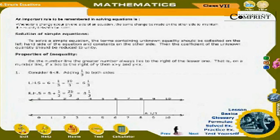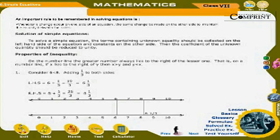An important rule to remember in solving equations: whenever a change occurs on one side of an equation, the same change must be made on the other side to maintain the equality between the sides. To solve a simple equation, collect terms containing the unknown on the left-hand side and constants on the other side, then reduce the coefficient of the unknown quantity to unity.